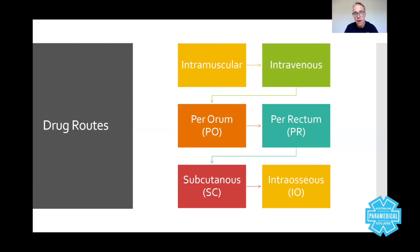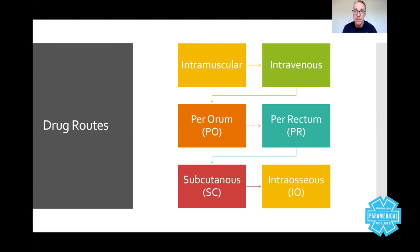Per oral (PO) is another method — it just means swallowing the drug. The unfortunate thing about PO is that it's a very slow route, about 10 to 15 minutes. Intravenous has an absorption rate of about 30 seconds because you're going straight into the bloodstream. Intramuscular has anywhere from two to five minutes, depending on the health of the muscles, circulation, the situation, the type of drug, how fast you give it, and the volume.